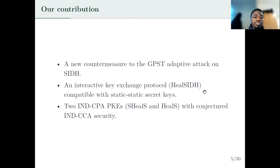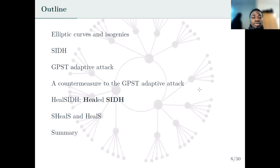In this paper, we suggest a new countermeasure to the GPST adaptive attack and incorporate this countermeasure into an interactive key exchange protocol. We also derive two IND-CCA secure PKEs, Shields and Heals, with conjectured IND-CCA security. This talk will be organized as follows: first, elliptic curves and isogenies; next, SIDH and the GPST adaptive attack; then our countermeasure, the key exchange Hillside, the PKE schemes Shields and Heals, and a summary of our contribution.